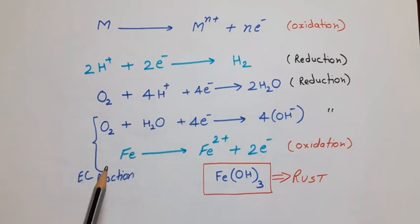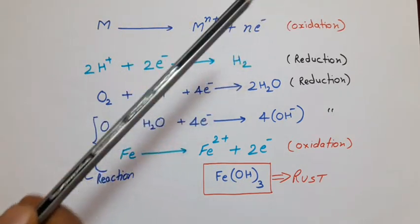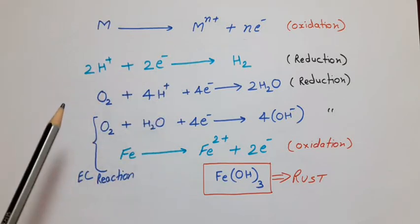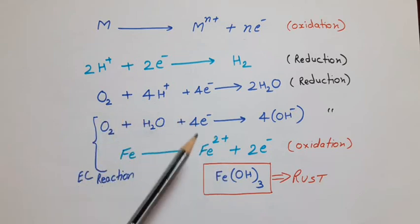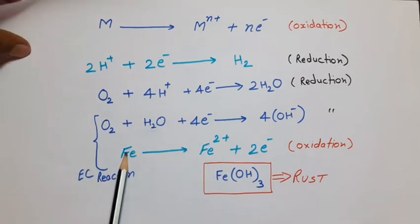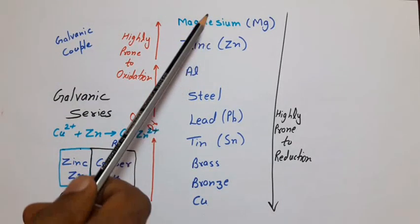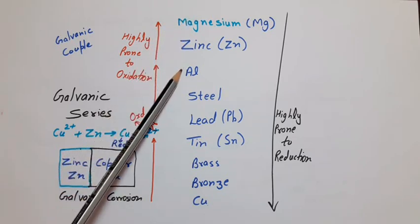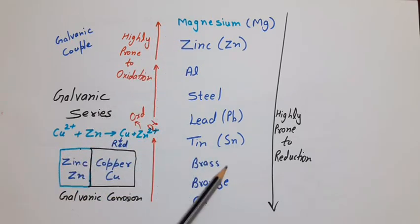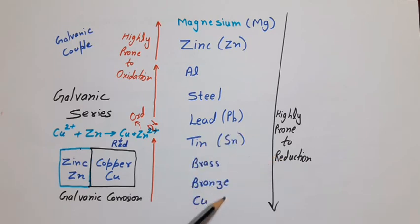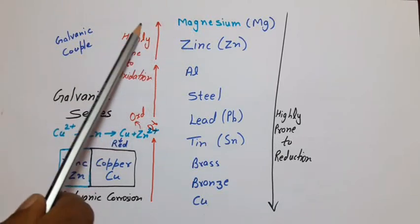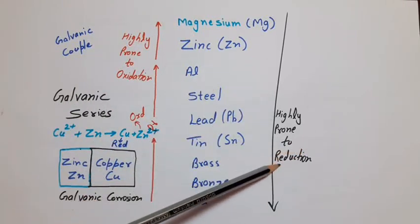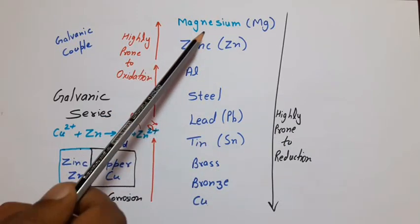We should also remember that only oxidation can't result in corrosion, and similarly only reduction can't result in corrosion. For corrosion, oxidation and reduction should take place at the same rate but at different sites. Here we see some elements which are arranged in a special order. The elements placed at the top of the series are highly prone to oxidation, and as we move downward in this series, the tendency of oxidation reduces. Similarly, the lower elements are highly prone to reduction, and as we move upward, the tendency of reduction gets reduced. It means the elements which have high tendency of oxidation will have low tendency of reduction, and vice versa.